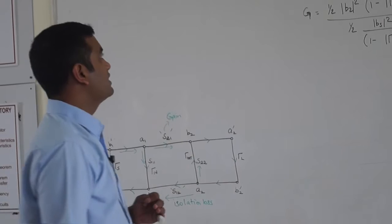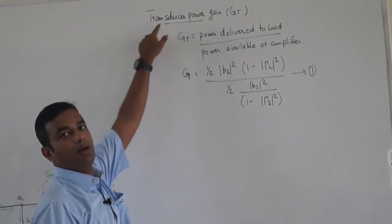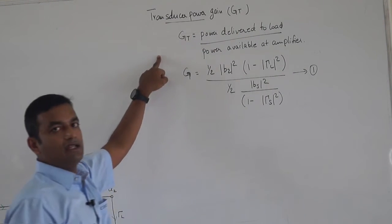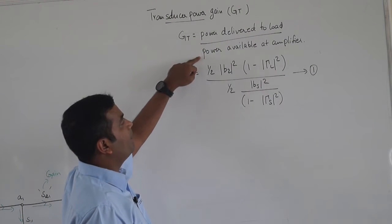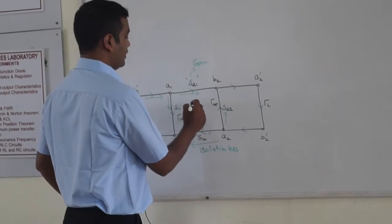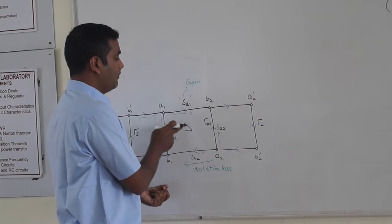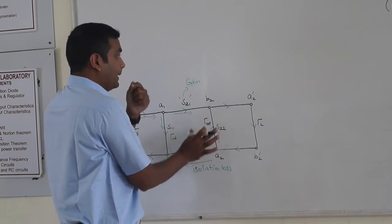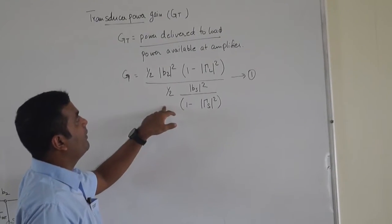Today we will start the next important amplifier relation, called transducer power gain G_T. The transducer power gain is defined as power delivered to the load divided by the power available at the amplifier. If you consider this as your amplifier system, the power gain of the amplifier will be output of the amplifier to the input that is available — that is the transducer gain.